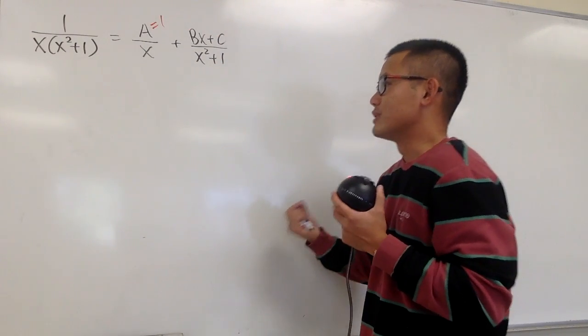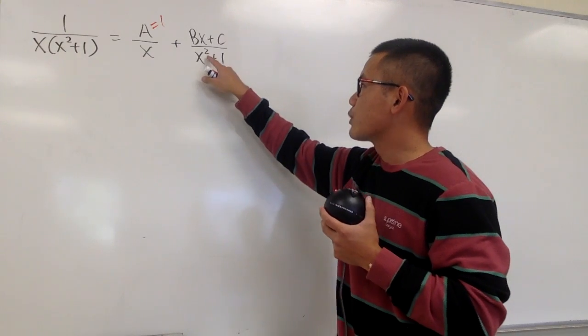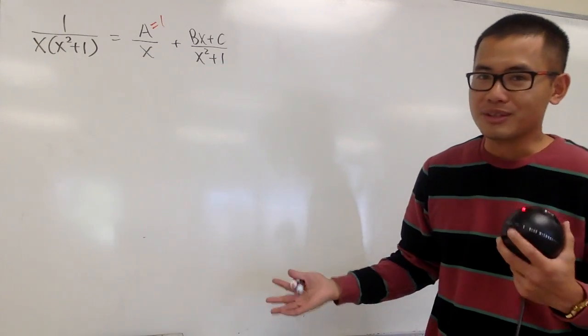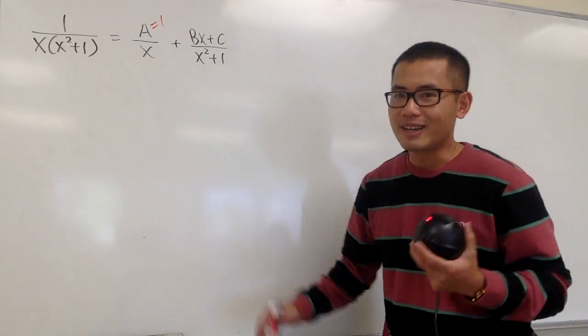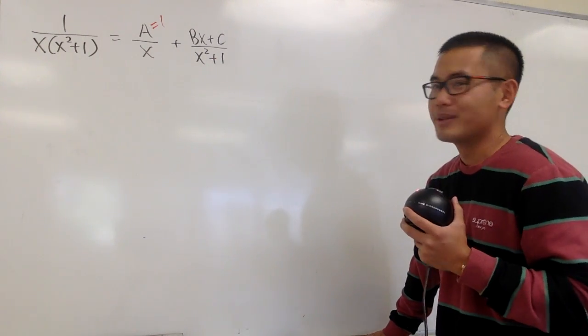And this is the most that we can do with cover-up, because right here, x squared plus 1, we cannot just cover it up and make that equal to 0. We, of course, are not going to use the complex numbers. So, this is what we can do.